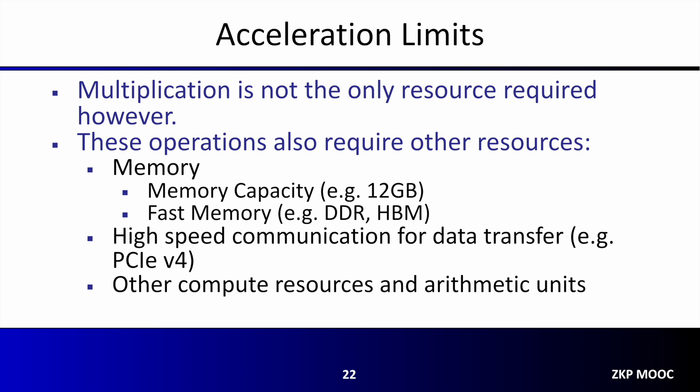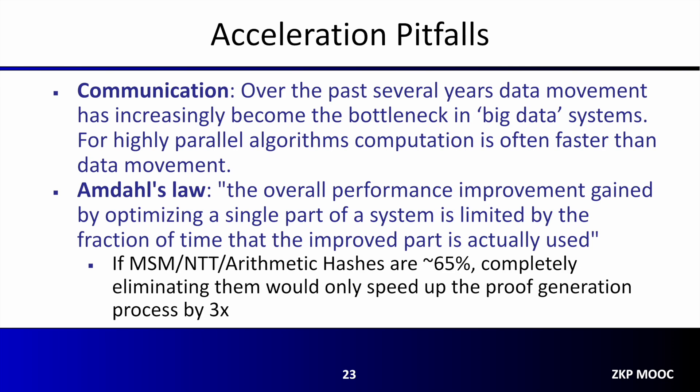Sometimes these bottlenecks can be alleviated by keeping data resident on the accelerator, thereby reducing the bandwidth requirements. This trend of data movement being the bottleneck rather than data computation is seen not just in NTT and ZKP systems, but has been a broader trend prevalent throughout big data and high-performance computing environments. For highly parallel algorithms, computation is often faster than the data movement itself, and therefore hardware-accelerated designs should seek to minimize data movement. Another consideration is that for small problems, it can sometimes be more efficient to perform computations directly on the host rather than on the accelerator.